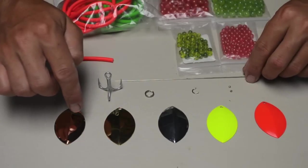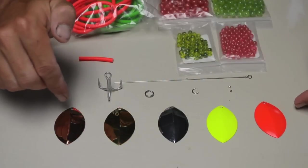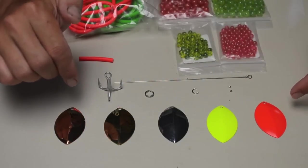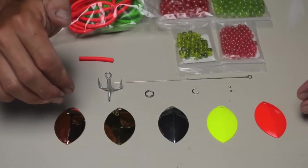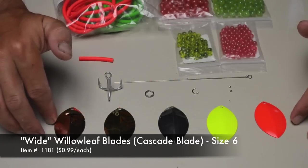Then comes probably the most important component of the spinner and that's the blade. For the trolling spinners here in the northwest for salmon and steelhead, I like to use these wide willow leaf blades - these are a size 6.